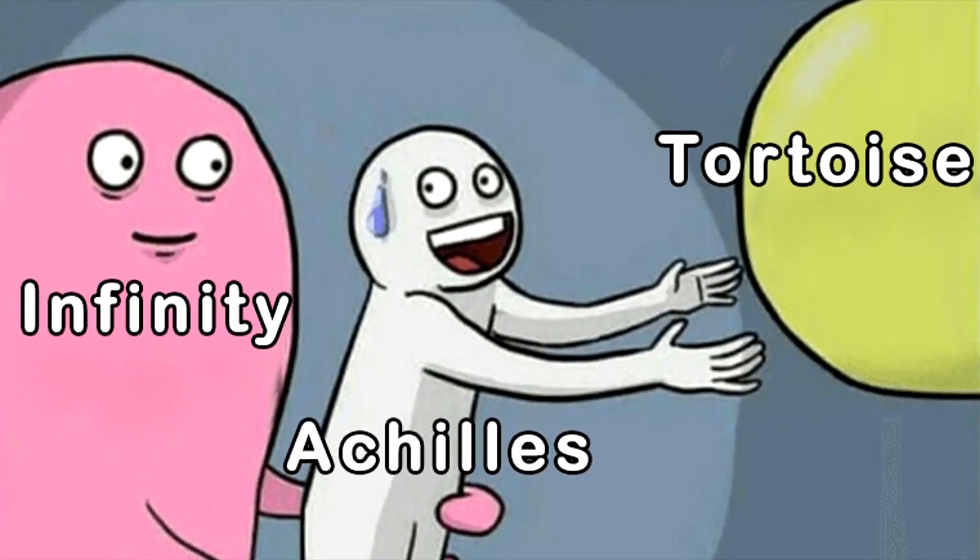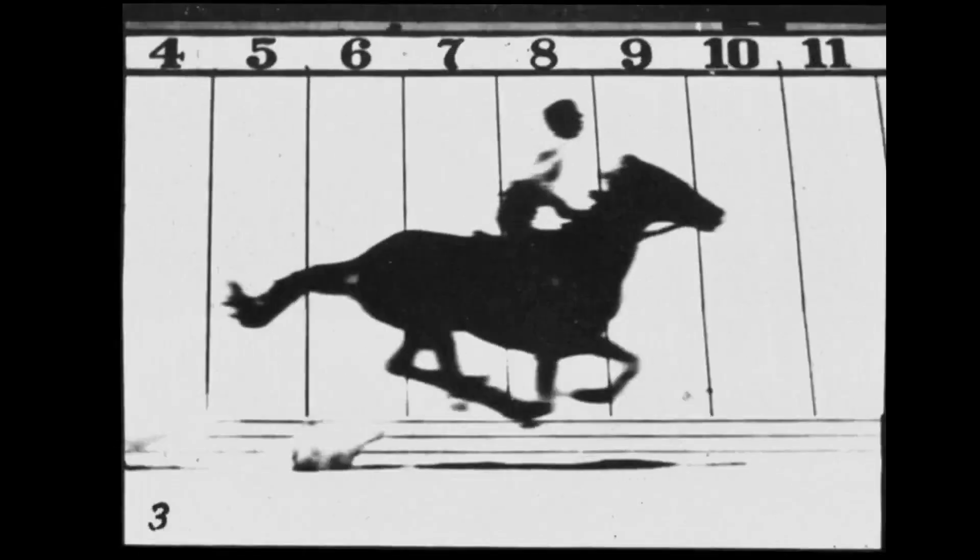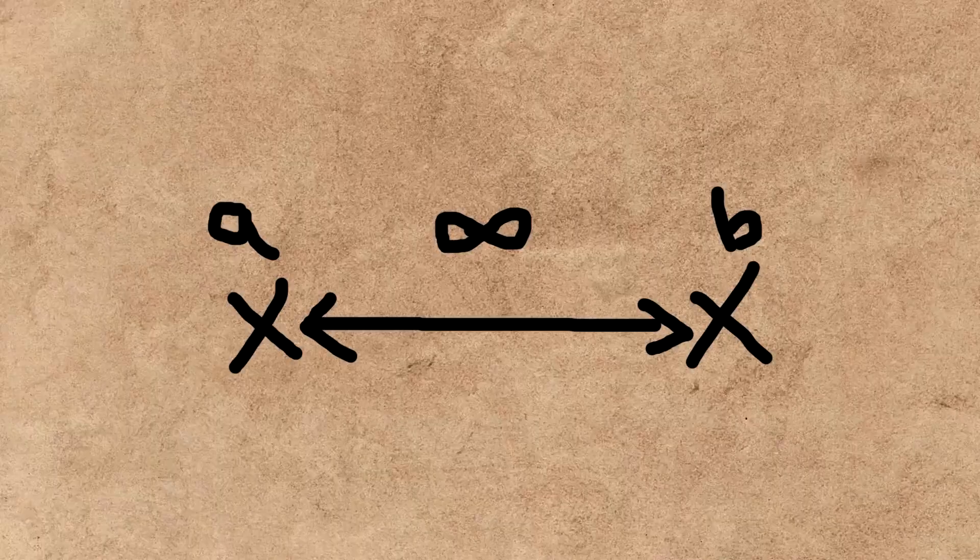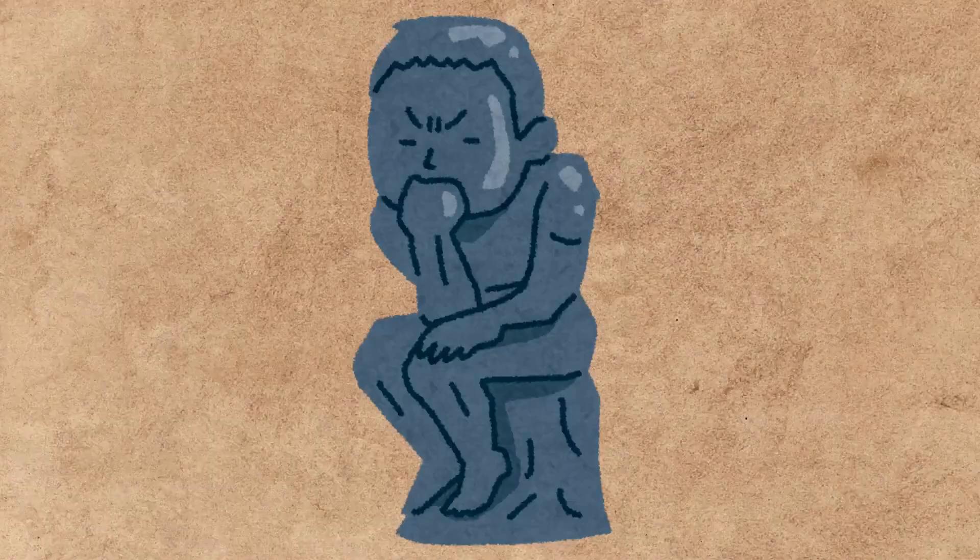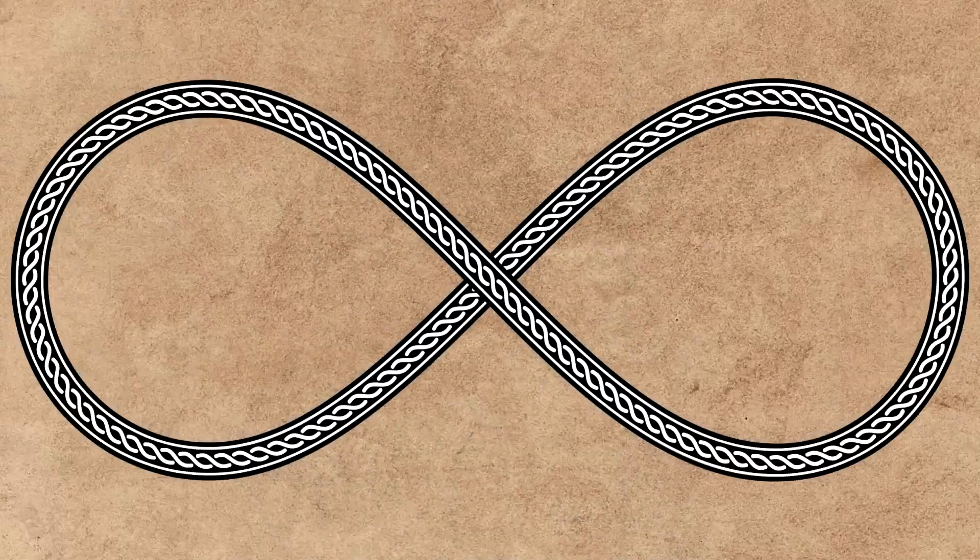Zeno's paradox highlights a fascinating truth about motion and space-time. Between any two points, there are infinitely many smaller points, and from a certain perspective, infinity exists everywhere.